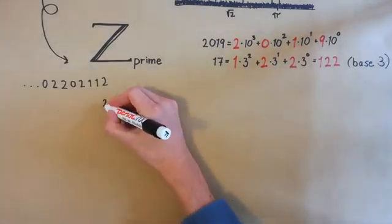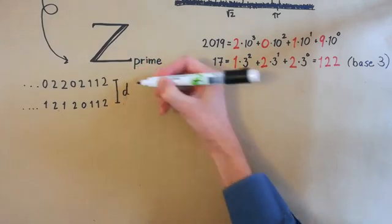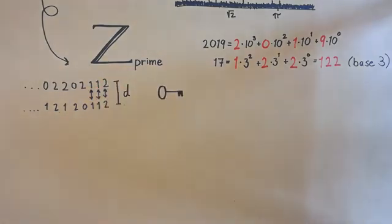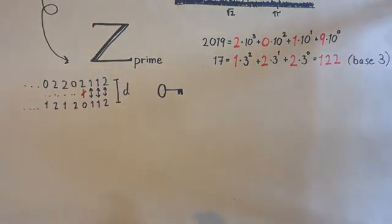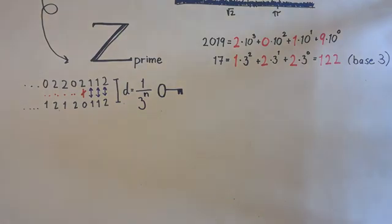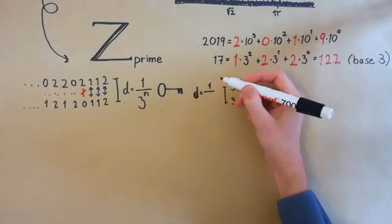The key step is to come up with a new way to say how far apart these numbers are, instead of the usual distance. What we'll do is to say that if the first n digits of two numbers are the same, then the distance between them is 1 over 3 to the n, so that numbers are closer together if many of their first digits are the same. Just like real numbers, only in the other direction.